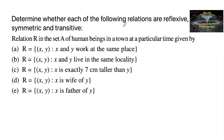Determine whether each of the following relations are reflexive, symmetric and transitive. Relation r in the set A of human beings in a town at a particular time, given by the first one: r = {(x, y) such that x and y work at the same place}.